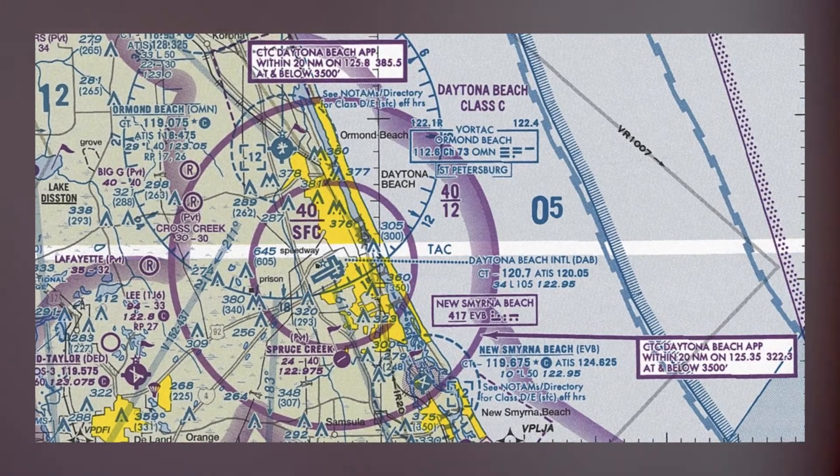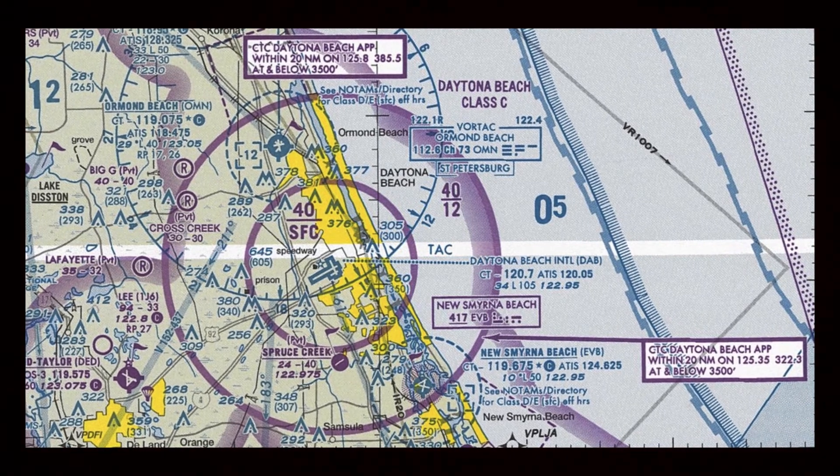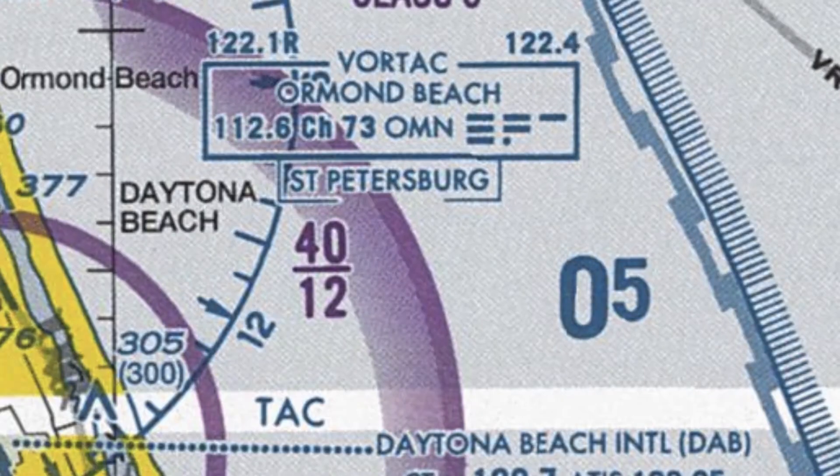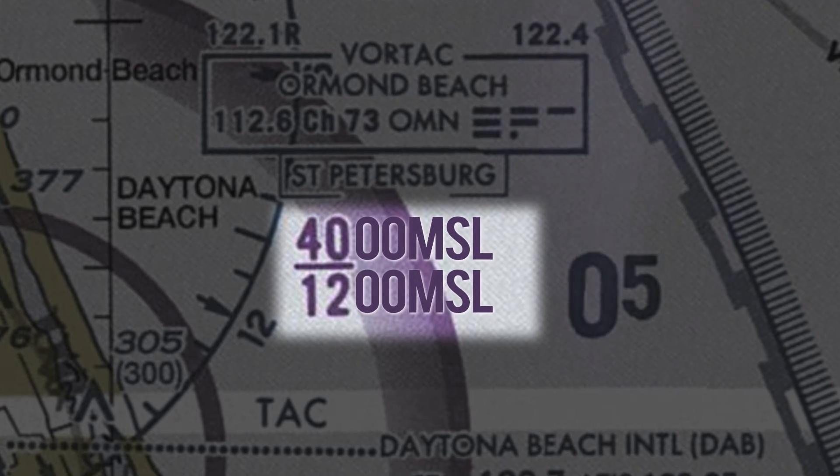One important thing to remember, and I'll say this again later in the course, is that on the sectional charts you will see the airspace boundaries—the upper and lower boundaries of different airspaces—marked in MSL (Mean Sea Level), not AGL. So you need to keep that in mind when reading the sectional charts and determining whether or not you can fly in a particular area.